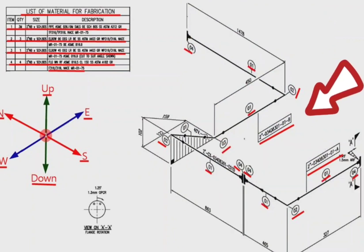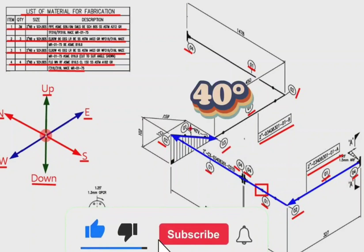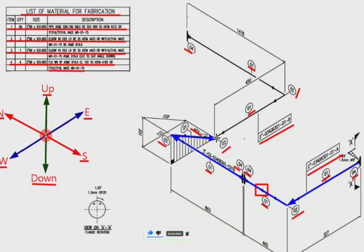Let's try to read this pipe isometric using these directions. We will start reading from this point because the direction of the arrow on the pipe drawing is in this direction. The pipe travels start from this point to the west direction. Then the pipe travel turns to the north direction. The pipe will move from this point first downward, then to the eastward at an angle of 45 degrees. In this point, the pipe travels continue to the east direction. At last the pipe turns to the north direction and the correct reading of the pipe drawing is completed.